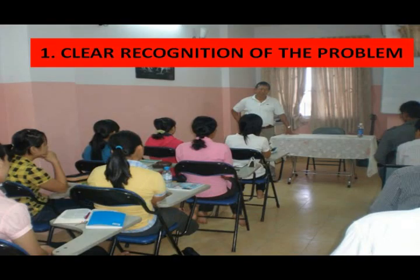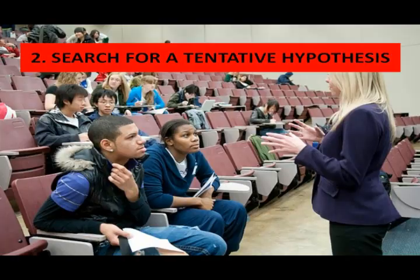Step number one: clear recognition of the problem. A clear recognition of the problem statement provides the basic link for the thinking process and the solution to the problem. Step number two: search for a tentative hypothesis. The second step in the detective method is the search for a tentative hypothesis — a tentative solution to the problem.